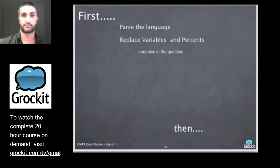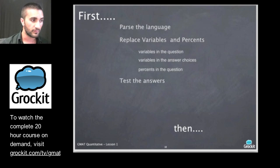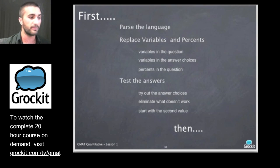We're going to replace variables and percents when we can. When we see variables in the questions, we're going to try and replace them. When we see variables in the answer choices, we're going to try and replace them. And when we see percents in the question, we're going to try and replace them with real values. We're going to test the answers. We're going to test the answers by trying them out. We're going to test the answers by eliminating what just doesn't make sense or doesn't work or is not possible. And if we're going to try answer choices out, we want to start with the second value because we can logically arrive at the right answer the fastest if we do that.